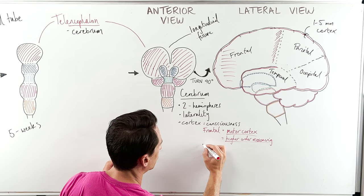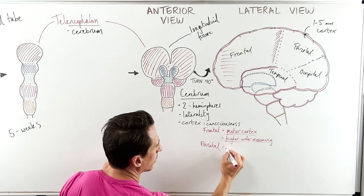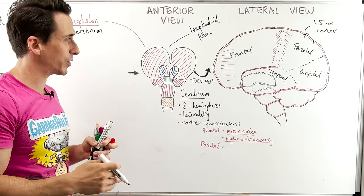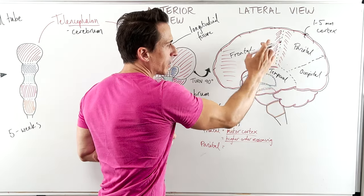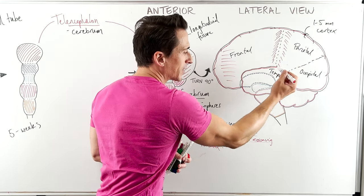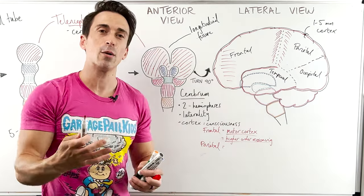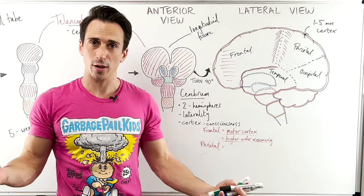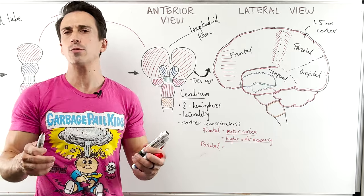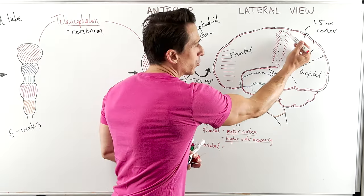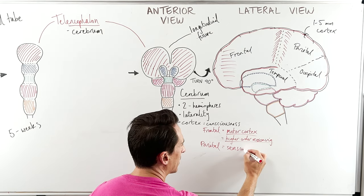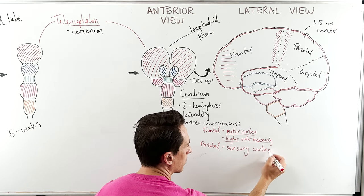The parietal lobe doesn't have a motor cortex, but right here, opposing the motor cortex, it has a sensory cortex called the somatosensory cortex. Signals initiating in the motor cortex of the frontal lobe go down to our motor neurons and to our muscles to say to move. But the somatosensory cortex is receiving signals coming up so you can understand what's happening in your environment — whether it's your internal or external environment. It picks up signals on touch, pain, temperature, pressure, vibration, and proprioception. If it gets to the somatosensory cortex, you become aware of it.